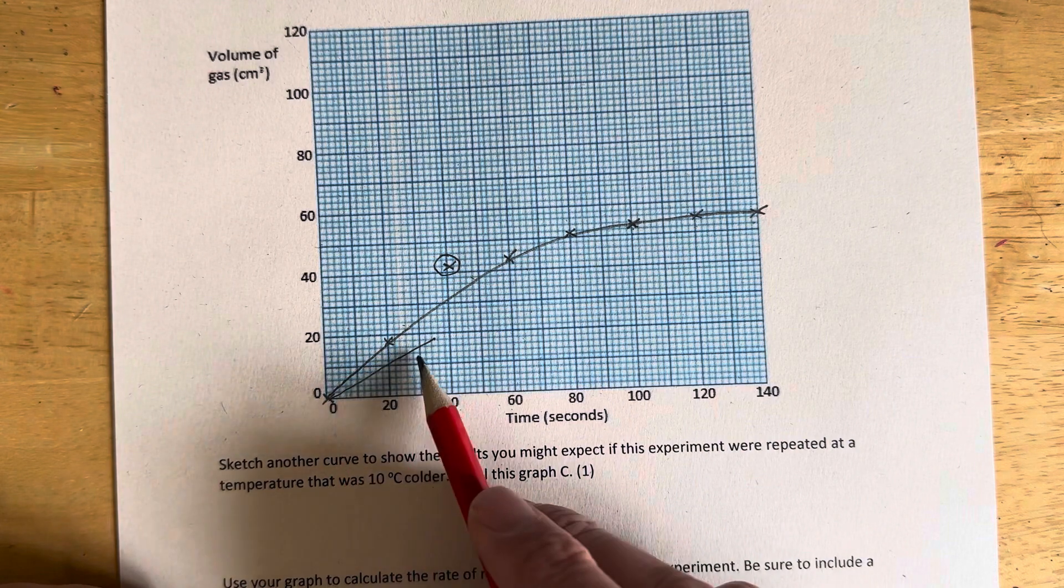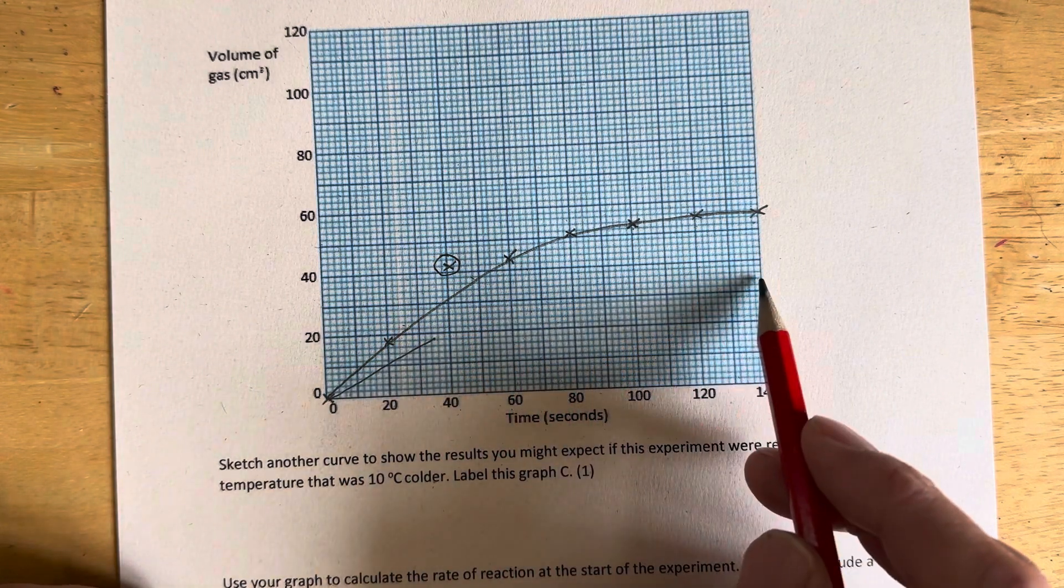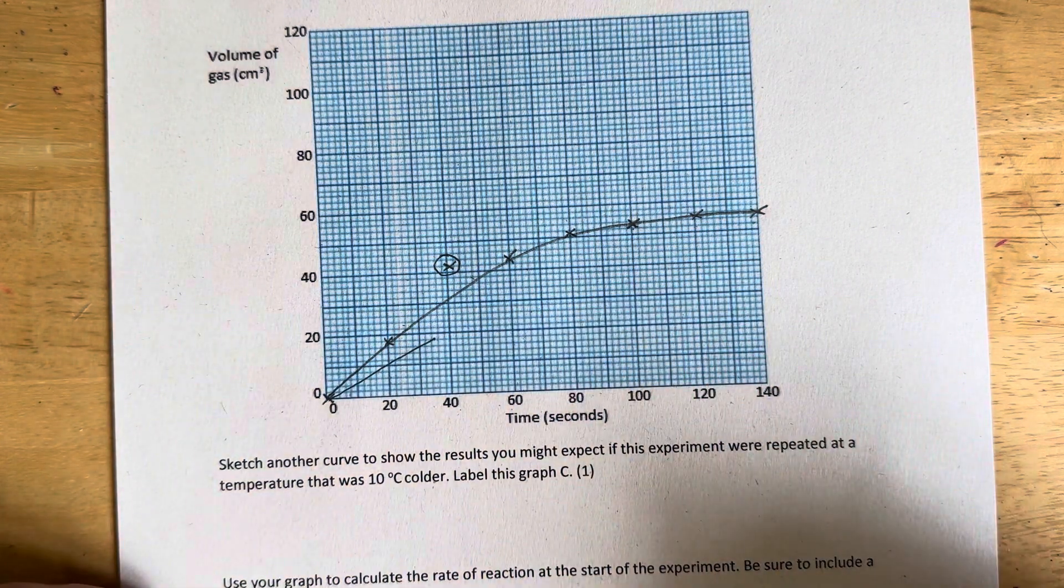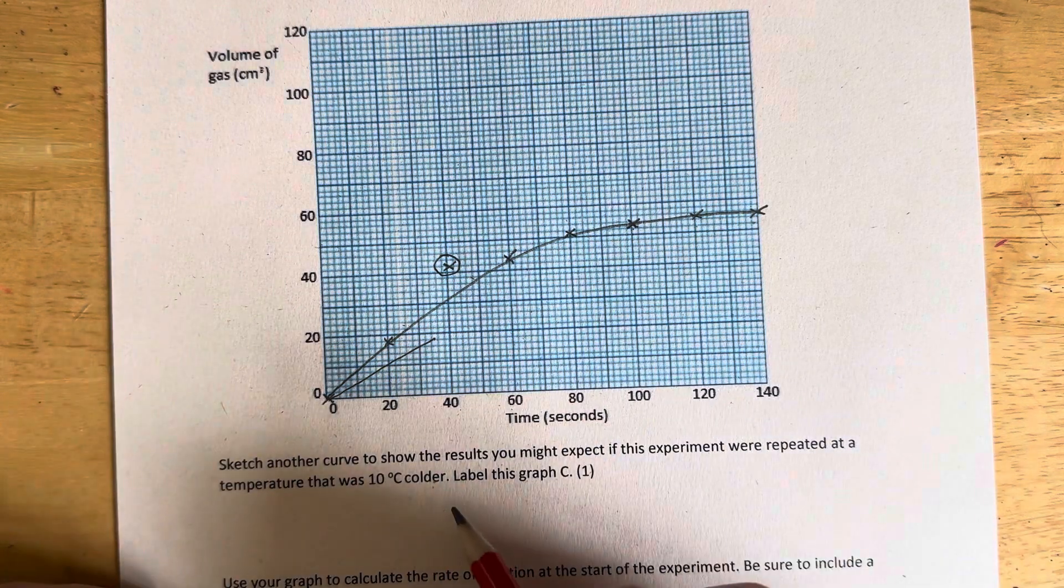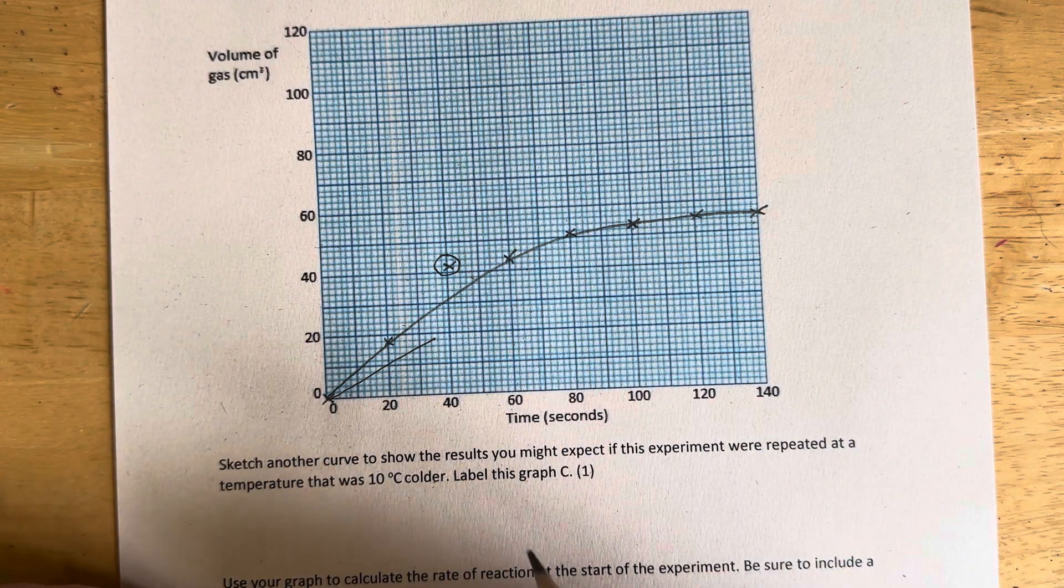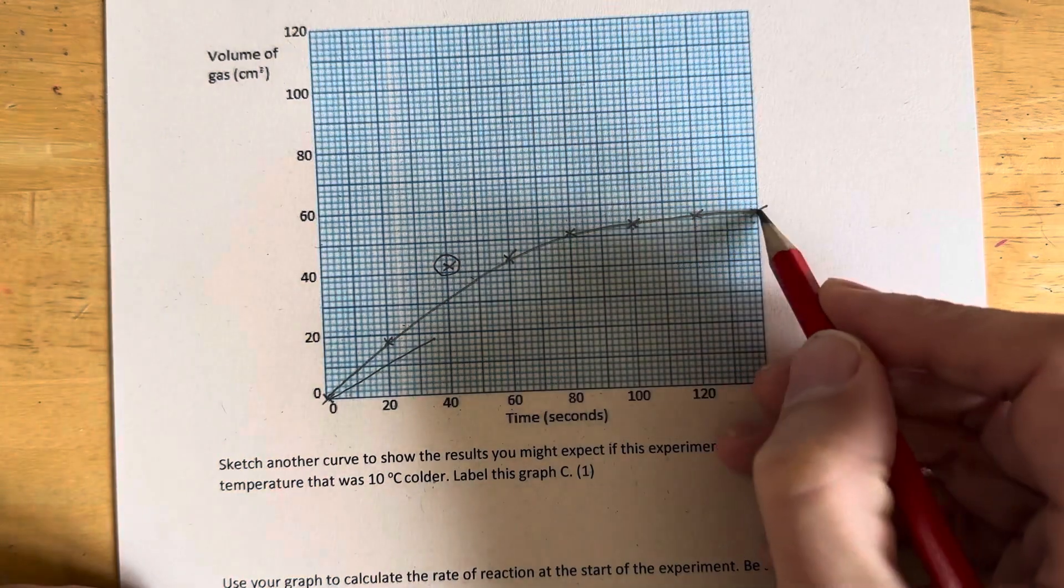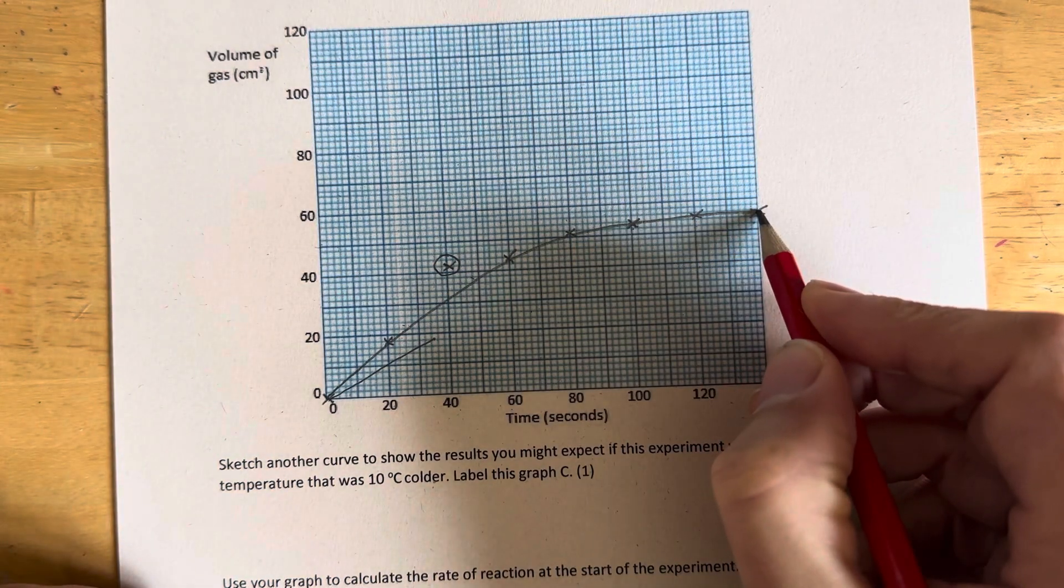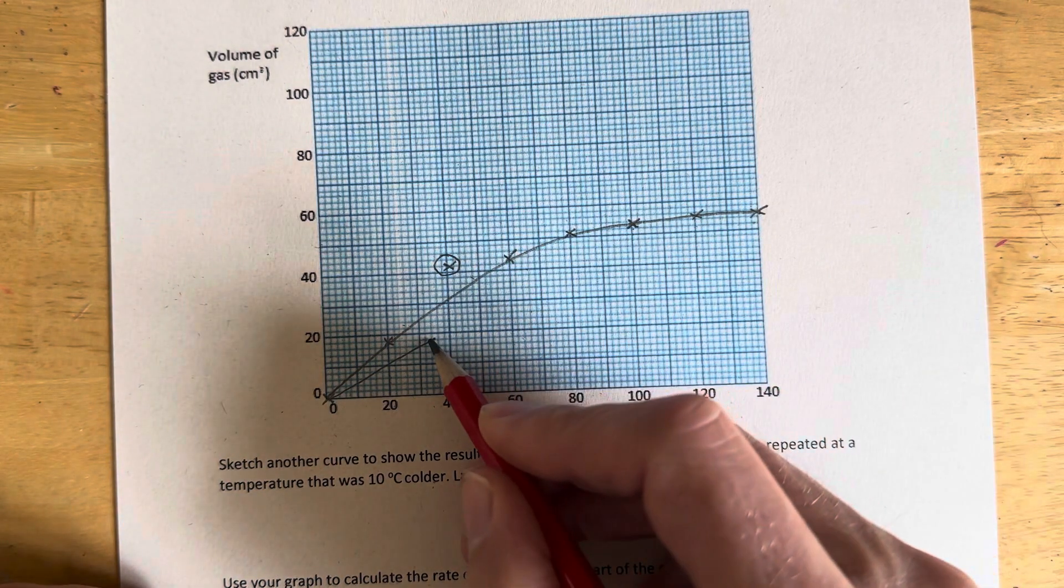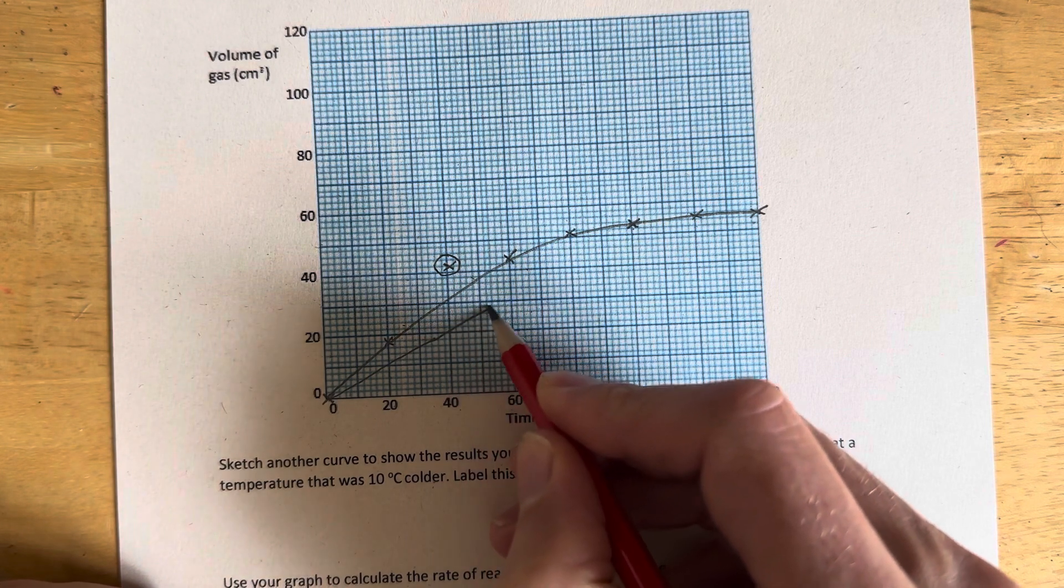So lots of students, because they're starting off shallower here, will end up with less gas, and that's obviously nonsense. Because we're starting with the same amount of particles, the same amount of acid and the same amount of magnesium, it's got to finish at the same place. It's going to take longer to get there, but it's got to finish at the same place for us to get that mark.